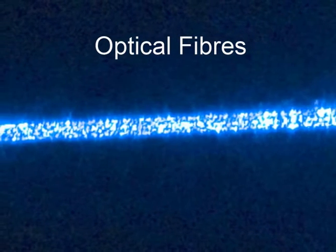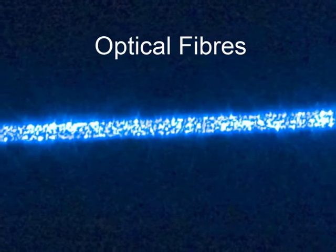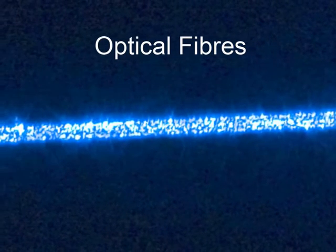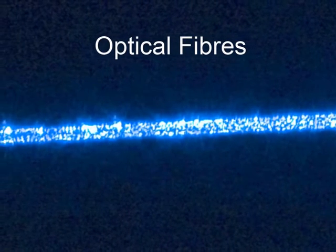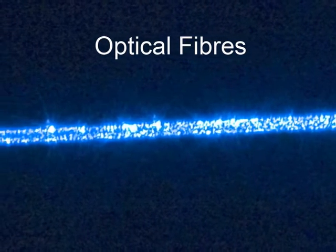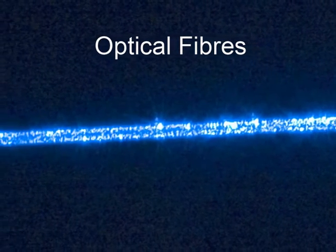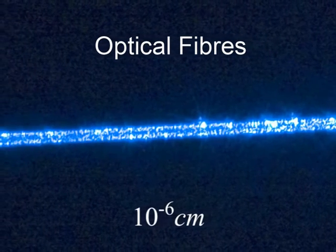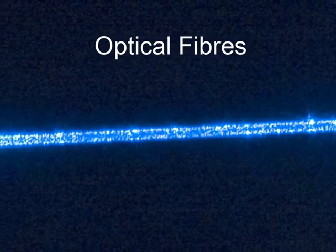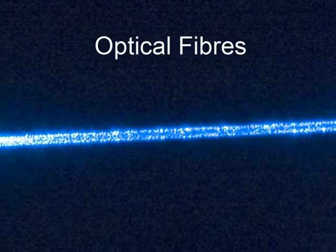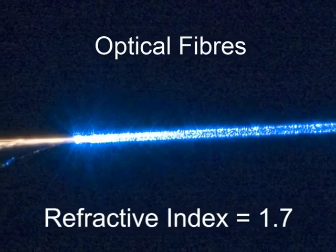Optical fibers consist of thousands of strands of extremely fine quality glass with a refractive index of about 1.7. The thickness of each strand is approximately 10 raised to the power minus 6 centimeters. The strands are coated with a layer of material of a lower refractive index of nearly 1.5.